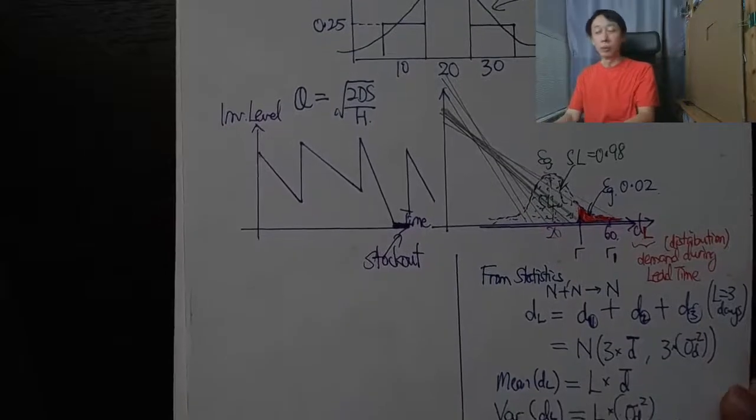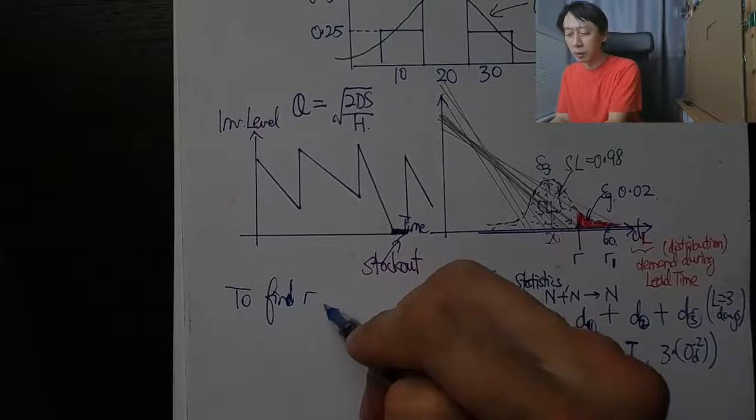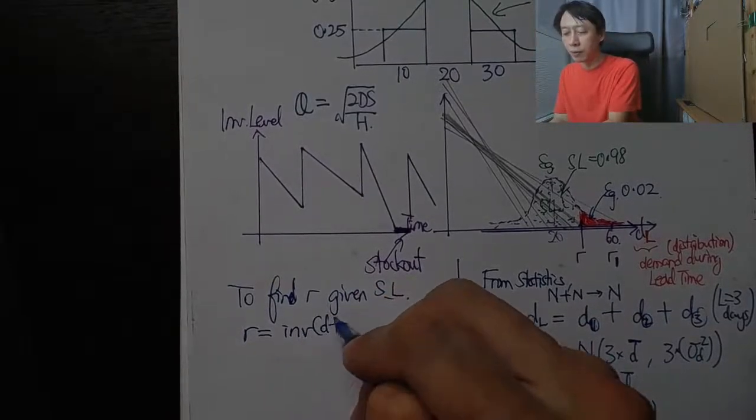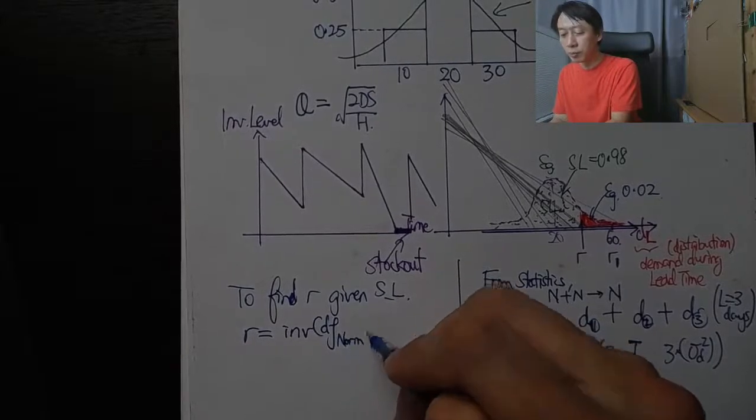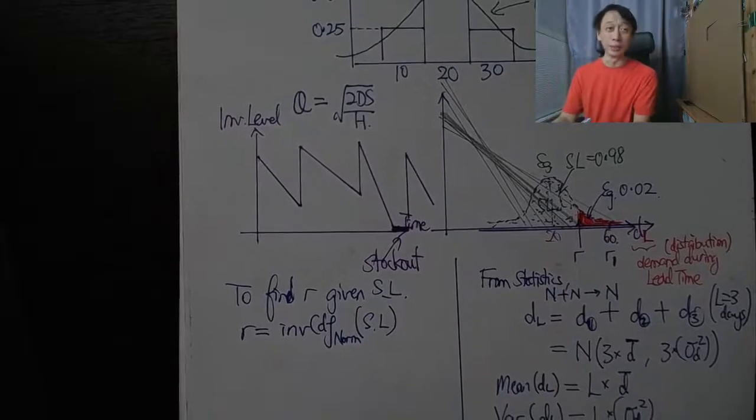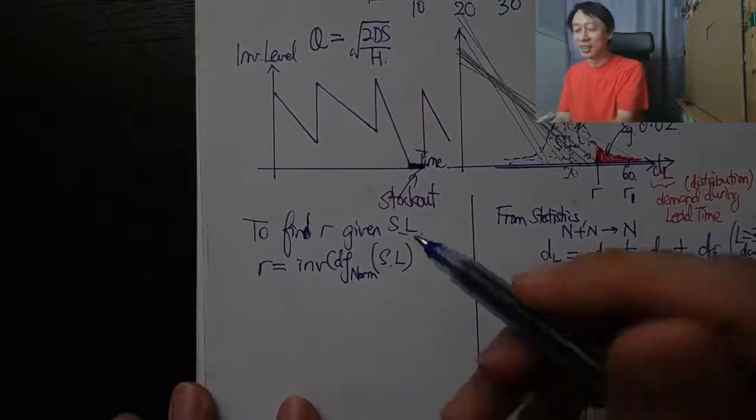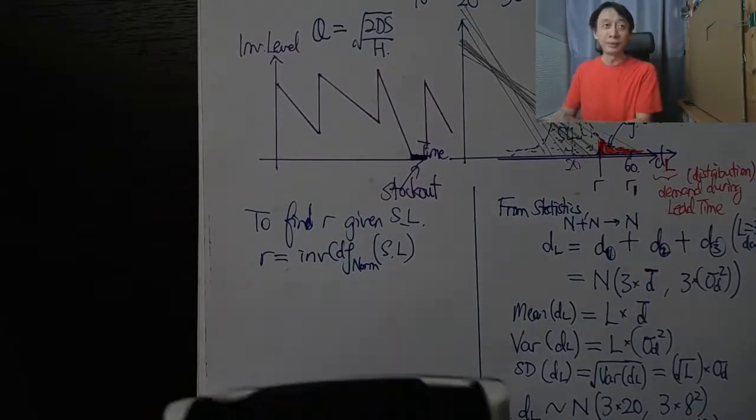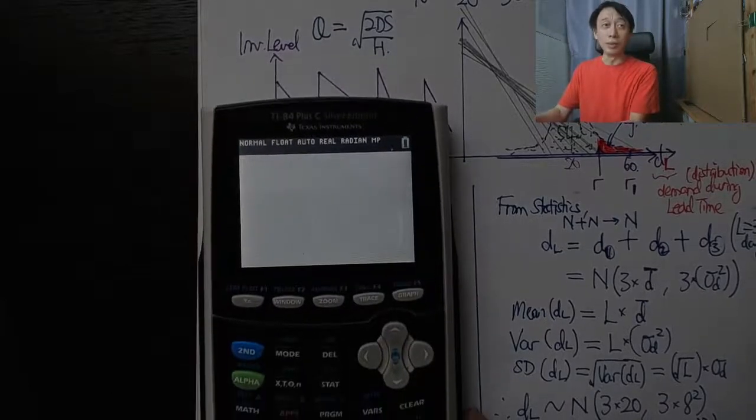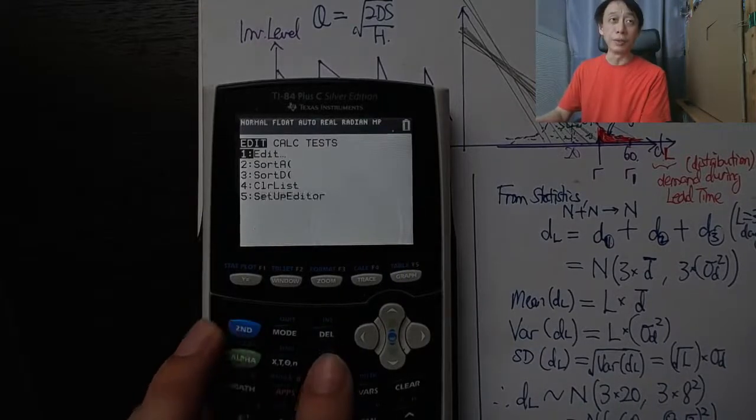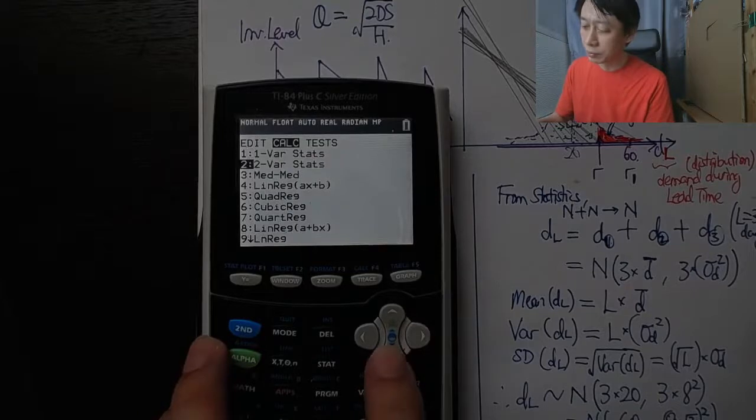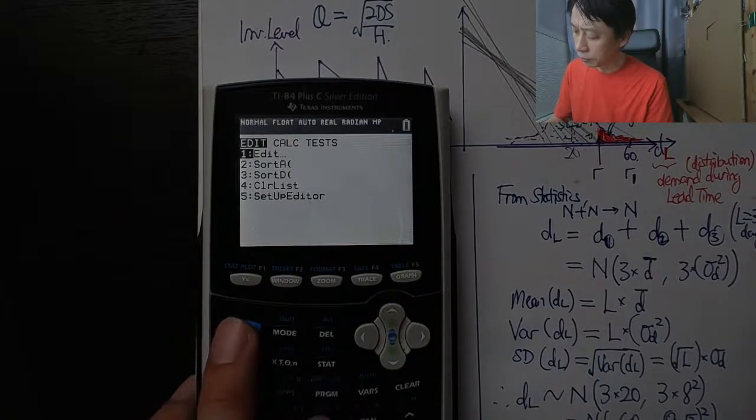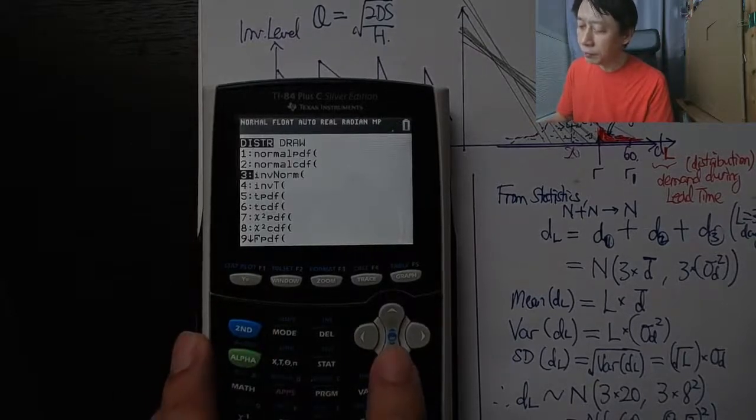So let's derive that. We want to find r given service level. R is equal to the inverse CDF of normal distribution given service level as the probability. If you have a TI calculator like this, all you need to do is run the inverse normal. Press second and vars, you have the inverse normal.